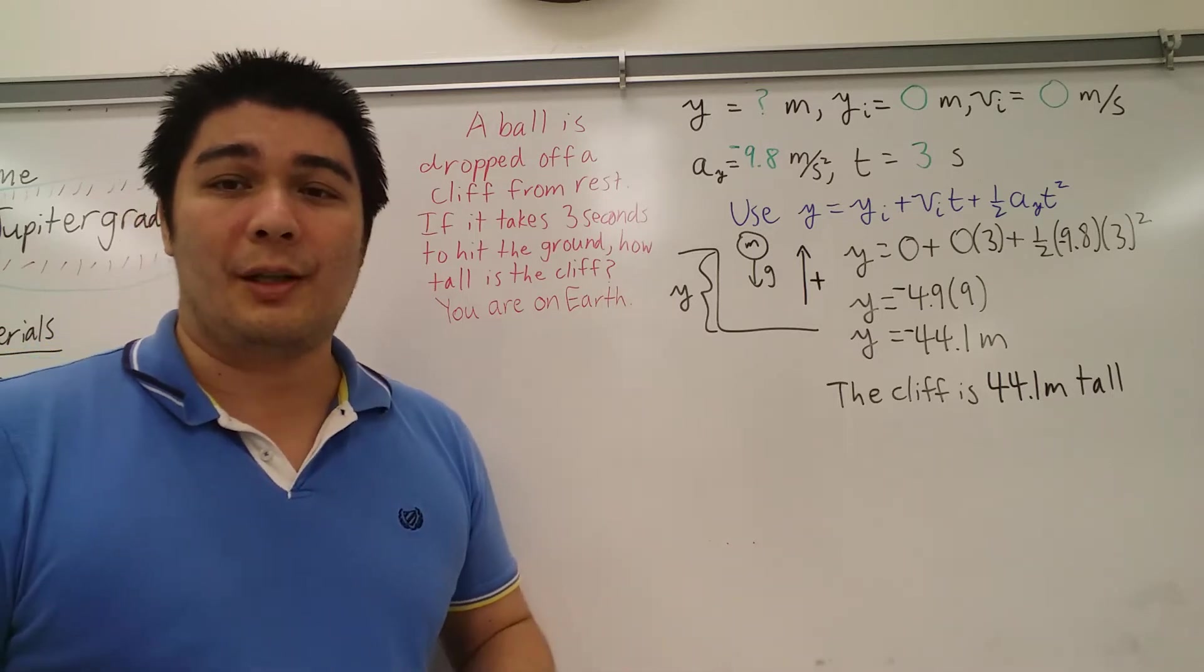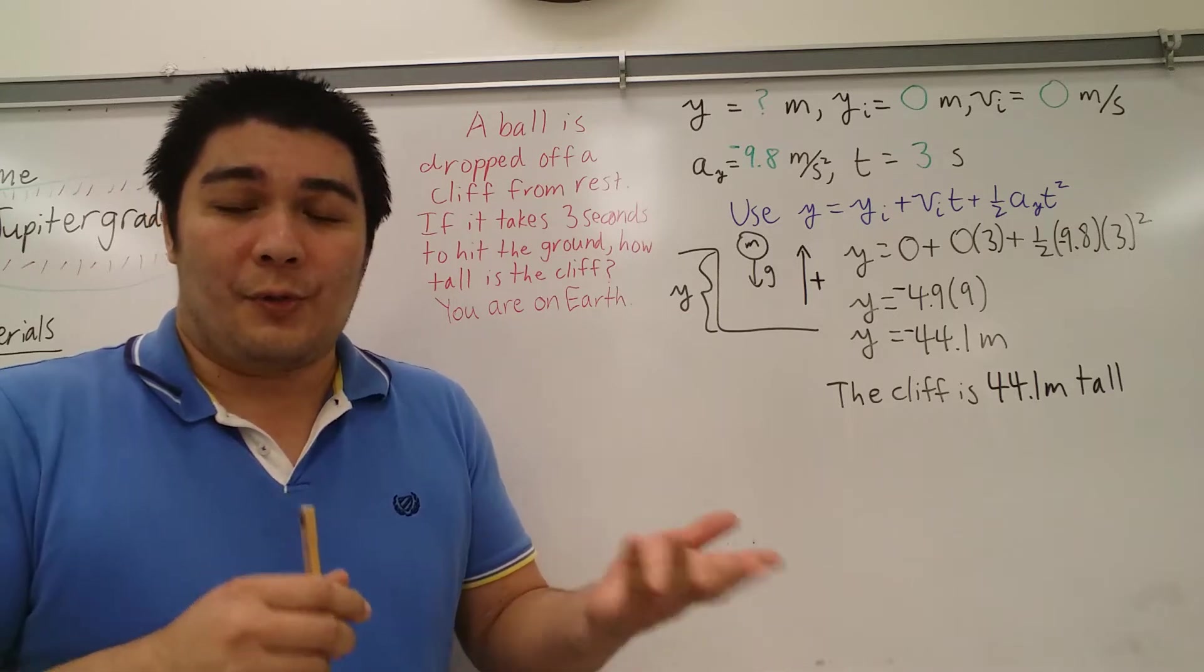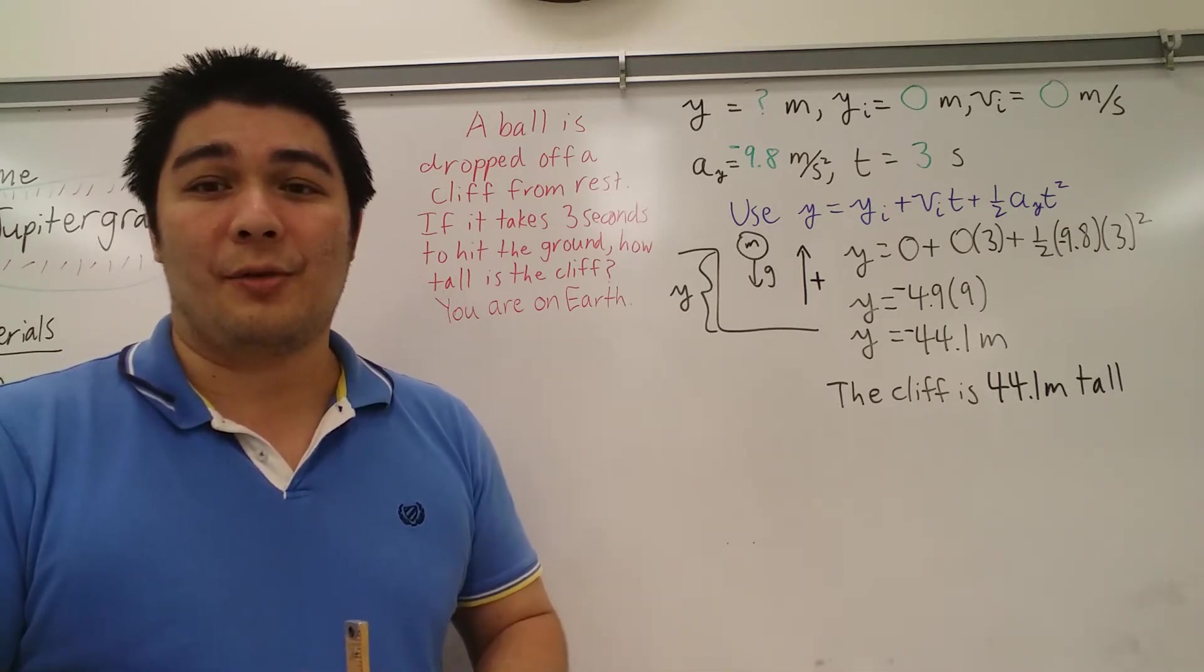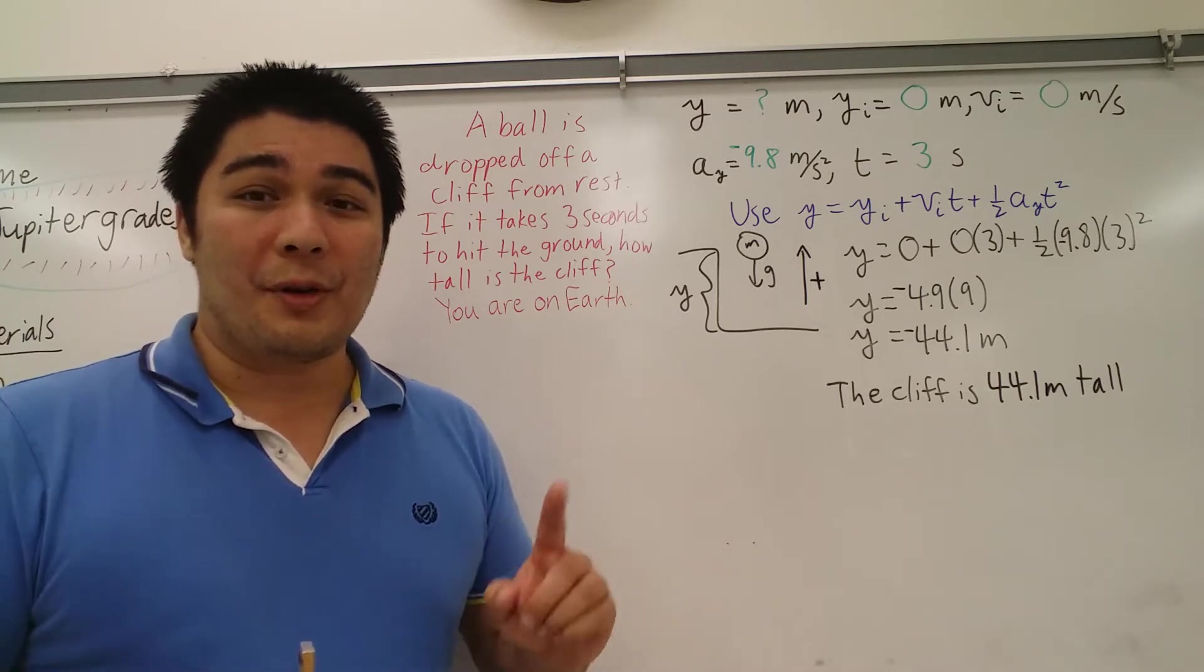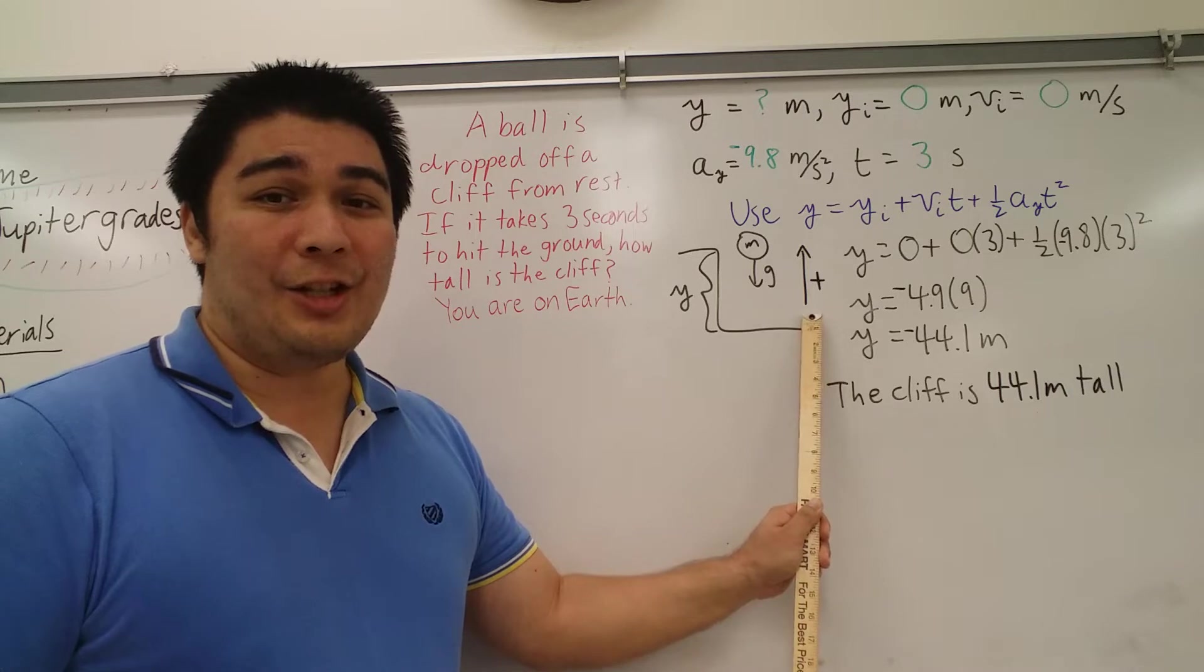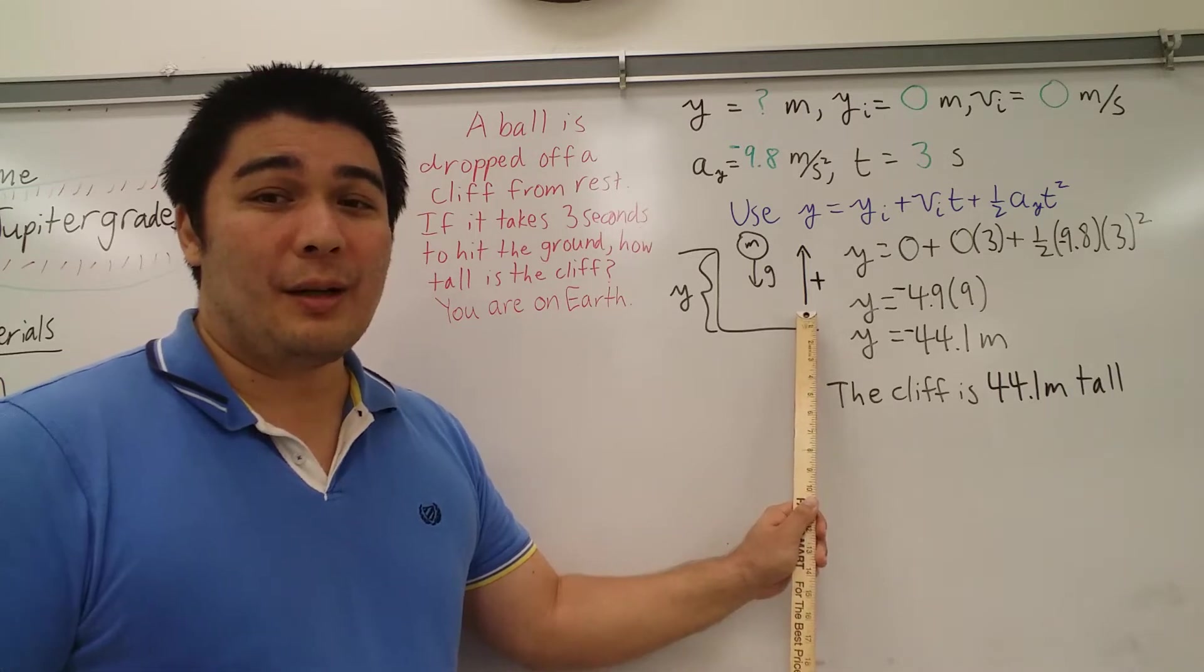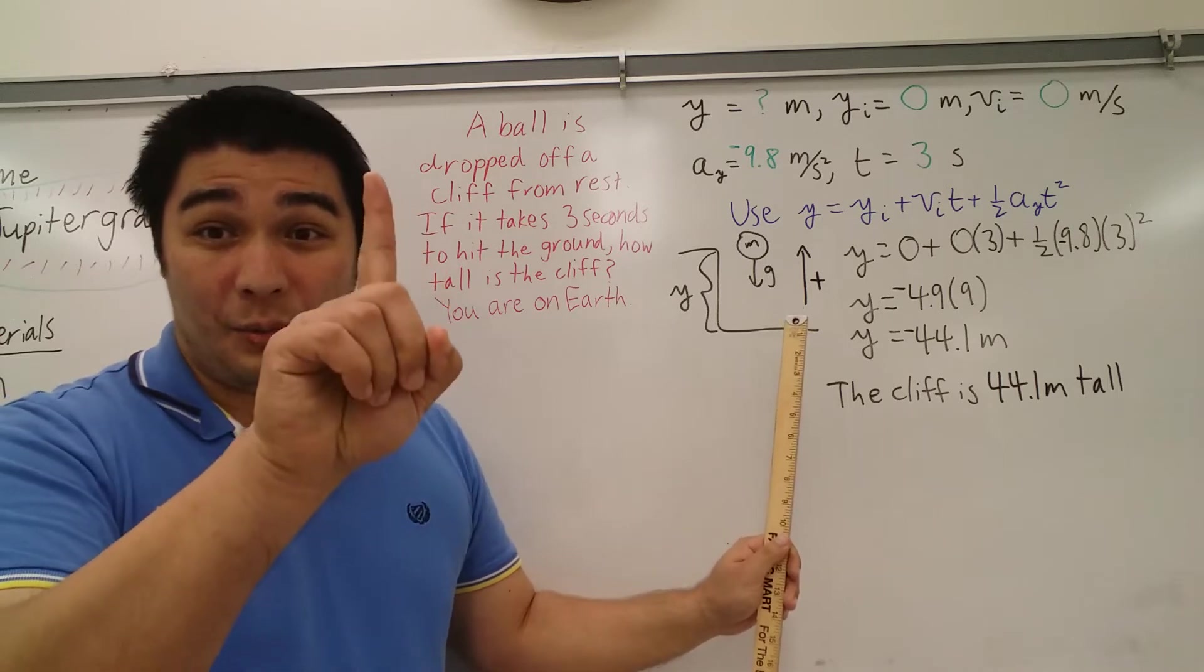So a ball is dropped off of a cliff from rest, and it fell for three seconds. If it falls for three seconds, how tall is the cliff? You are on Earth. Same problem as we did last time, however, if you'll notice, the difference is that I changed this direction of positive from being down to up.